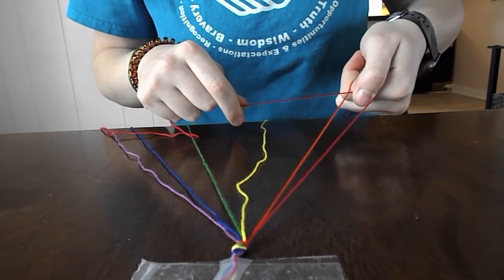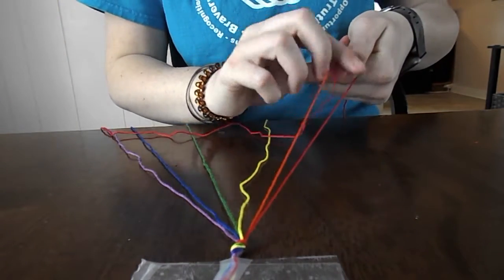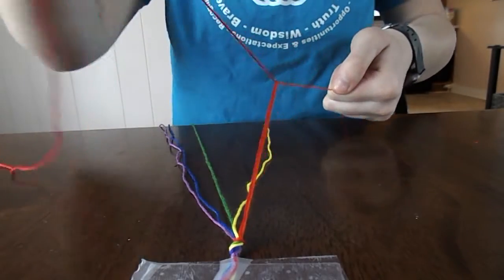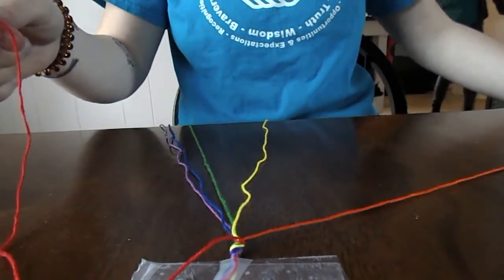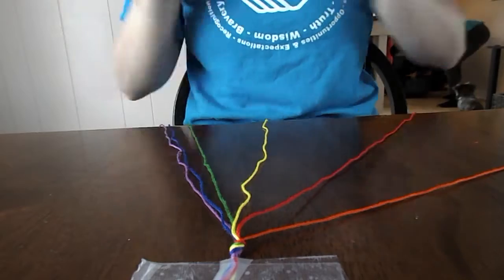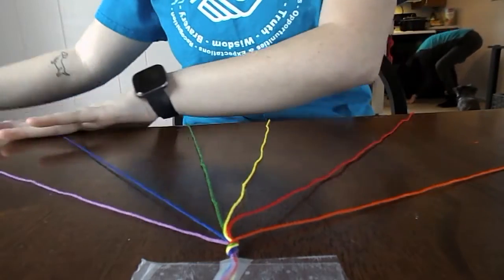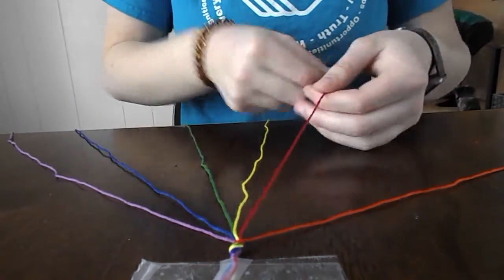Once you have completed the first knot, you are going to repeat. Loop string 1 under string 2 and pull up. Once you have completed two knots on string 2, then you begin the same process on string 3.